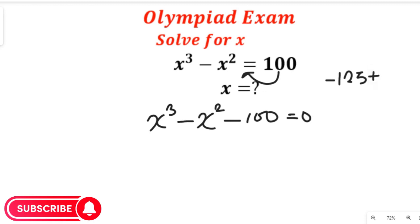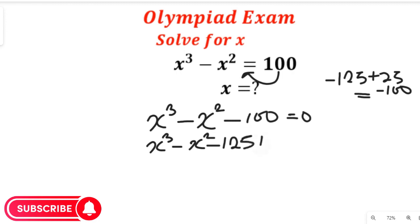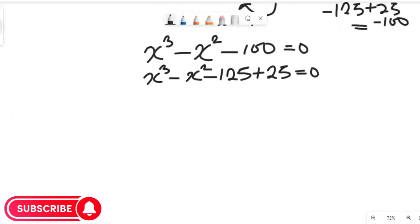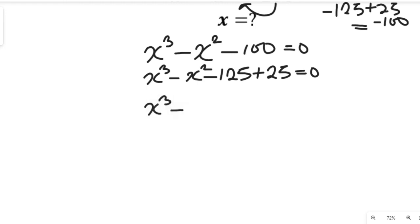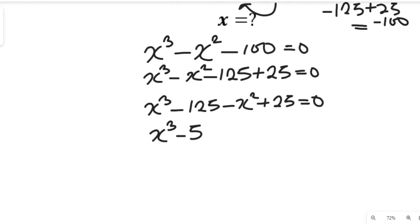Negative 125 plus positive 25 will give us negative 100, so we're going to replace this with that. We'll have x to the power of 3 minus x to the power of 2 minus 125 plus 25, and this will be equal to zero. Remember, 125 is 5 to the power of 3, and 25 is 5 to the power of 2, so this will be equal to zero.